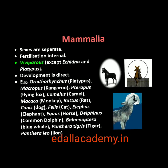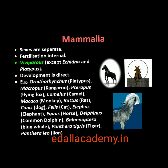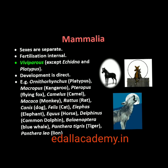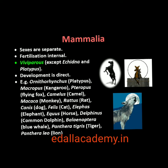They are viviparous with few exceptions and development is direct. Examples — Oviparous: Ornithorhynchus (platypus). Viviparous: Macropus (kangaroo), Pteropus (flying fox), Camelus (camel), Macaca (monkey), Rattus (rat), Canis (dog), Felis (cat), Elephas (elephant), Equus (horse), Delphinus (common dolphin), Balaenoptera (blue whale), Panthera tigris (tiger), Panthera leo (lion).